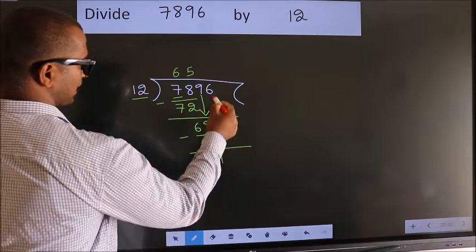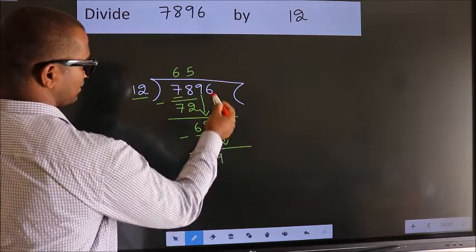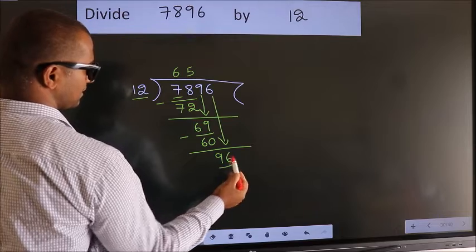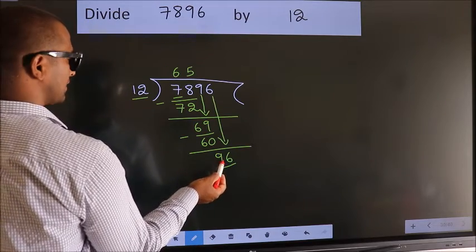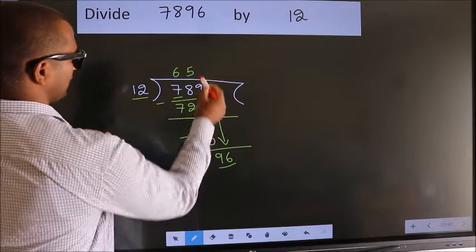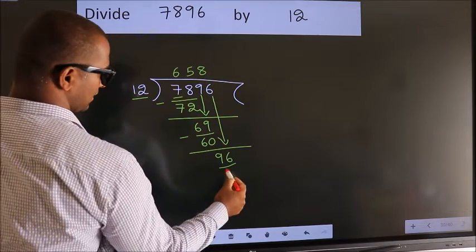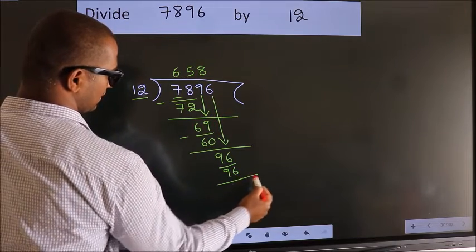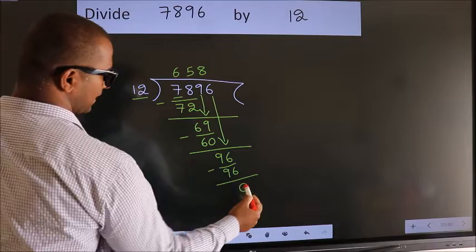After this, bring down the beside number. So 6 down, 96. When do we get 96? In the 12 table, 12 times 8, 96. Now we subtract. We get 0.